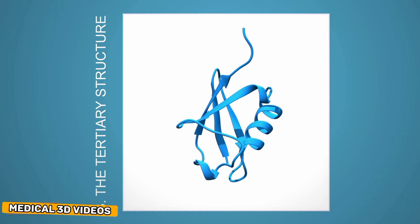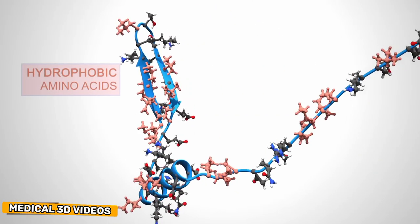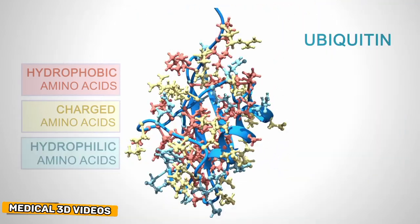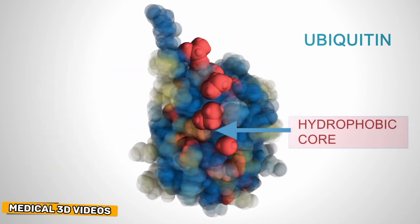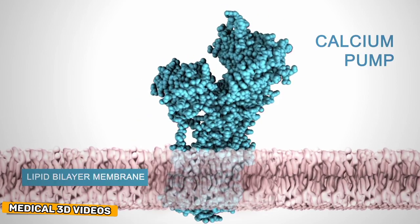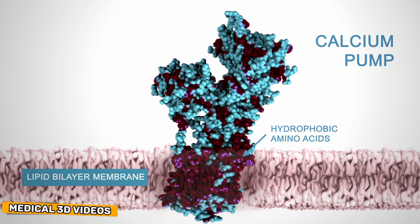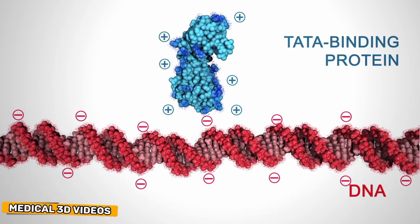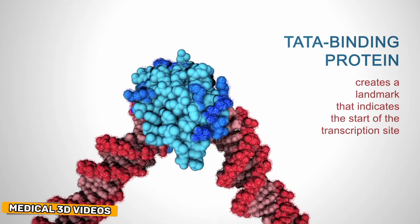The tertiary structure of a protein is the three-dimensional shape of the protein chain. This shape is determined by the characteristics of the amino acids making up the chain. Many proteins form globular shapes with hydrophobic side chains sheltered on the inside, away from surrounding water molecules. Membrane-bound proteins have hydrophobic amino acids clustered together on their exteriors, so that hydrophobic side chains can interact with the lipids in the membrane. Charged amino acids allow proteins to interact with molecules that have complementary charges.